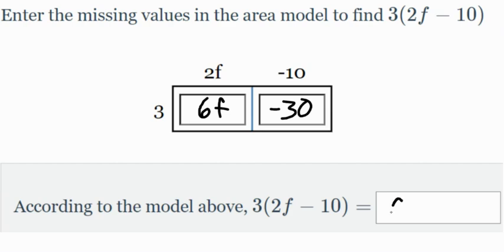So our final answer is going to be 6f minus 30. 6f minus 30. So after we distribute through here, we get 6f minus 30.